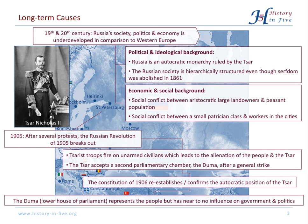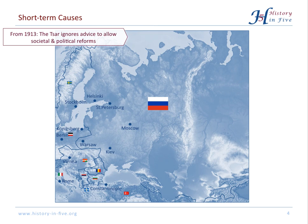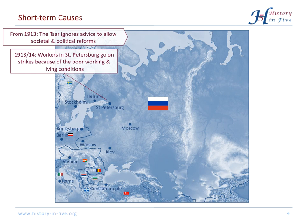Now to the short-term causes. The Tsar was often told he needed to initiate societal and political reforms, but he refused. So in 1913 to 1914, workers went to the streets of St. Petersburg because of the poor working and living conditions.